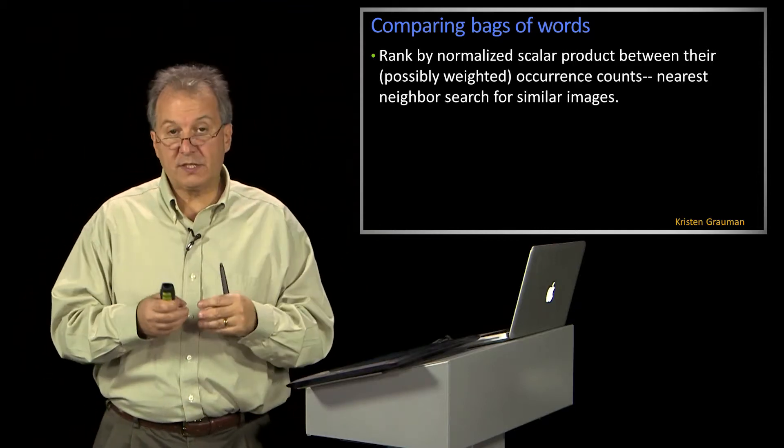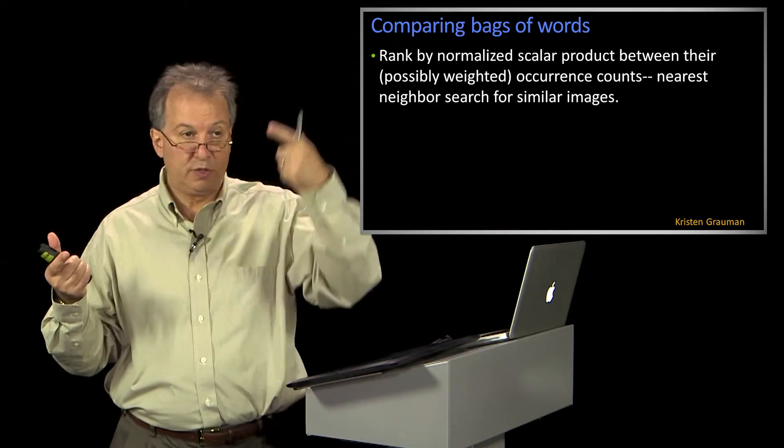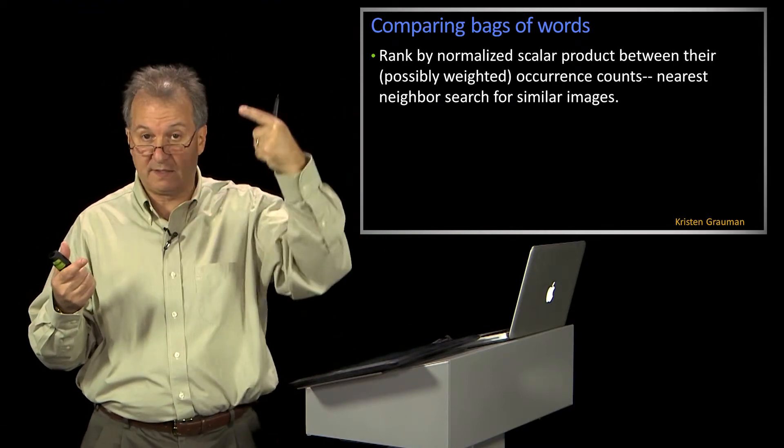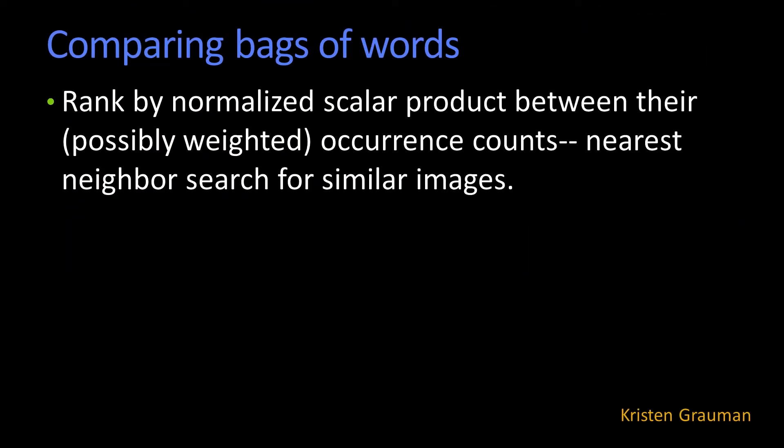So one way of doing this is just compare that distribution to the distributions of the images that you know. And you can do it as, say, like a scalar dot product, right? So just a histogram, if you normalize it to one, you can think of it as a normalized vector.